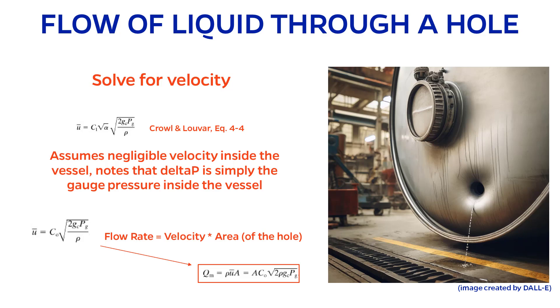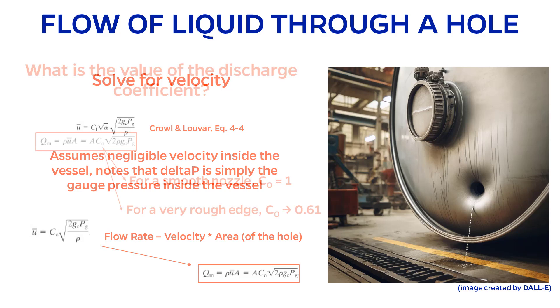If I want the mass flow rate instead of the volumetric flow rate, also multiply by density. If any of this is confusing, perform a unit check to see why these operations are necessary.